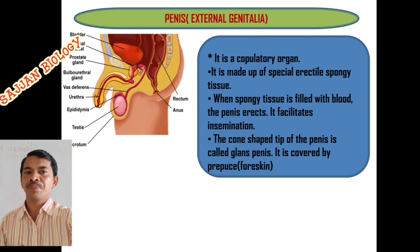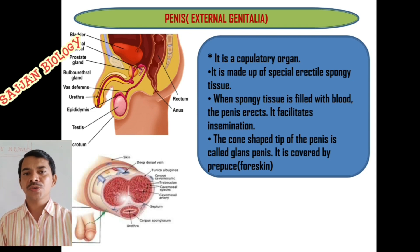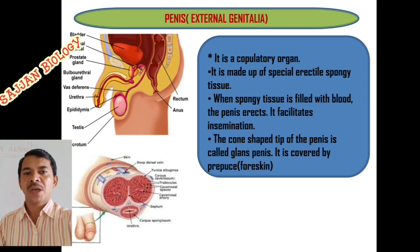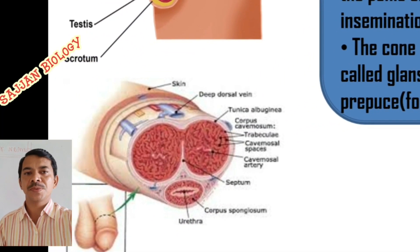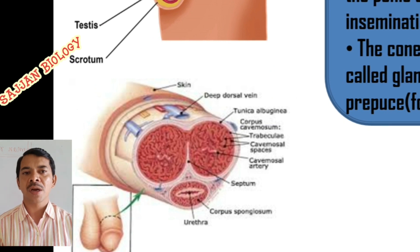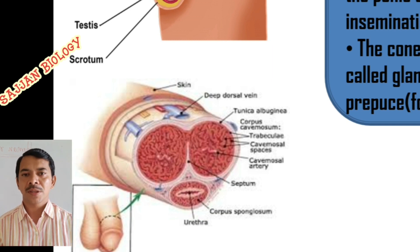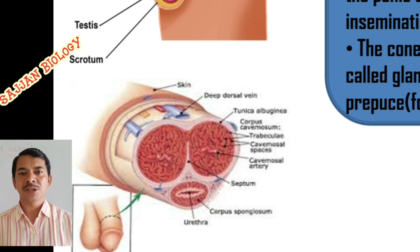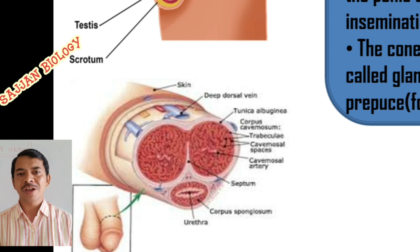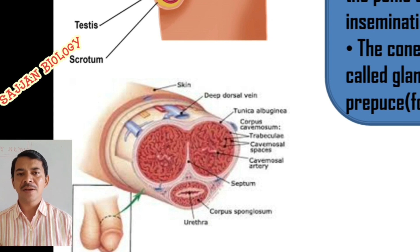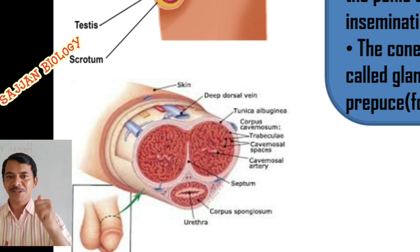The foreskin is also called the prepuce. You can see the structure of the penis in the diagram, which shows the two tissues — corpora cavernosum and corpus spongiosum — and how the blood vessels are connected to the penis. That's all for today's session. We will discuss new concepts in the next session. Remember: study for knowledge, not for marks. Take care, bye.